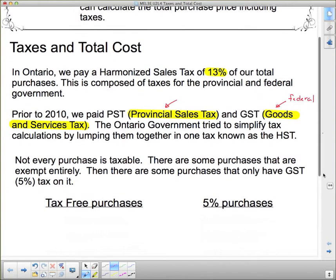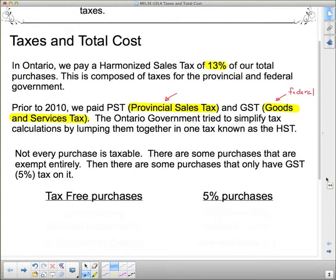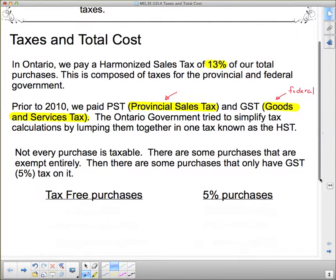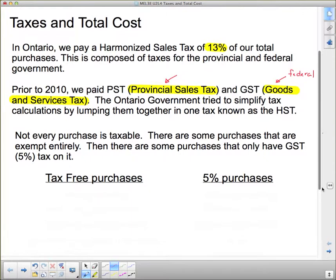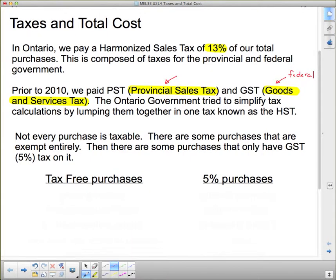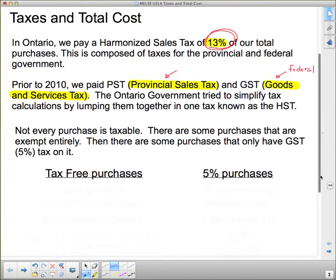Not every purchase is taxable. There are some purchases that are entirely exempt, and there are some purchases that only have GST, which is currently 5% tax on it. GST was up to 7% but was reduced first to 6% and then to 5% by the Stephen Harper government. You may find questions in your textbook that use 15% as the total, but you should use the current sales tax rate of 13%.